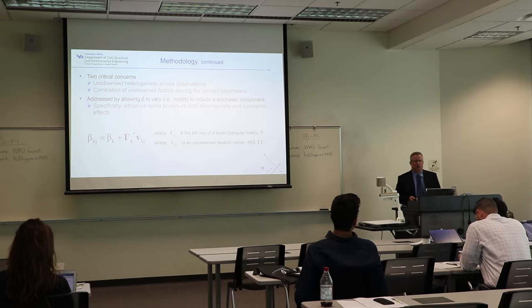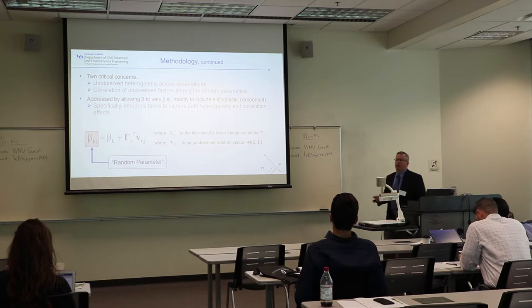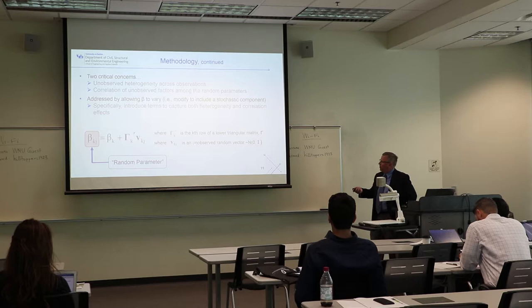Originally, with a fixed parameter, you have a deterministic component — the beta — which is the measurable part. We add a stochastic component: a gamma matrix that accounts for correlations, and a vector that accounts for unobserved heterogeneity across observations. What we end up with is what we term a random parameter — a fixed deterministic component plus an unknown unobserved component.